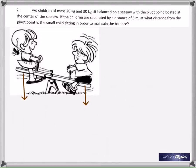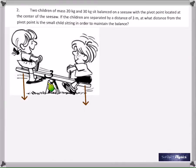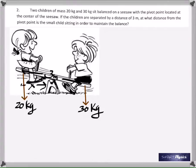In the second question, two children of 20 kilograms and 30 kilograms are balanced on a seesaw, and the pivot is at the center of the seesaw. The children are separated by a distance of 3 meters — that 3 meters is the separation between the two children. At what distance from the pivot point is the small child sitting? We take the distance of the smaller child from the pivot as x, so the other distance would be 3 minus x.